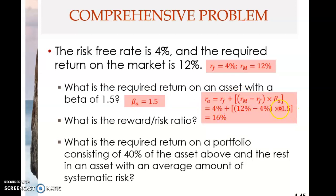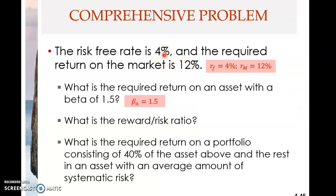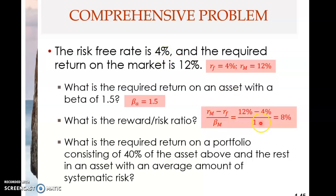Applying the formula: 4% plus (12% minus 4%) multiplied by 1.5 gives 16% — that is the required return on that asset. The reward-to-risk ratio is always 8%: 12 minus 4 divided by the market beta of 1 equals 8.